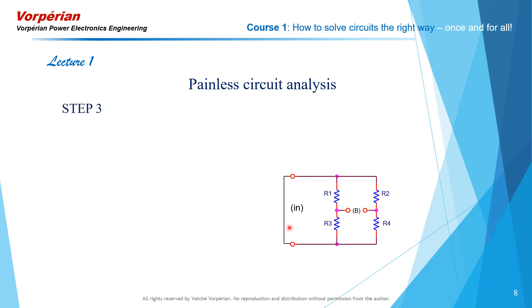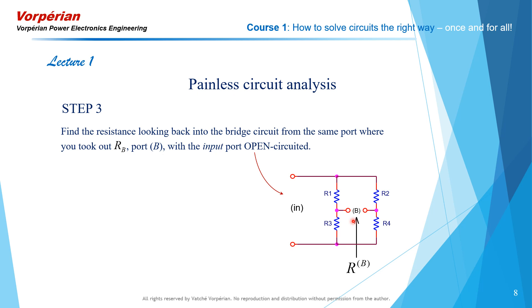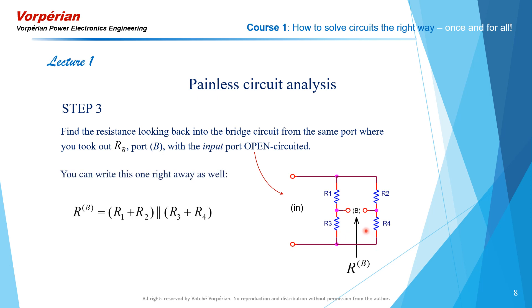Step three. I repeat the same operation looking back into port B and determine the resistance while the input port is an open circuit. I call this Roman R super B. This one I can write by inspection as well — it is R1 plus R2 in parallel with R3 plus R4. So we write that down.